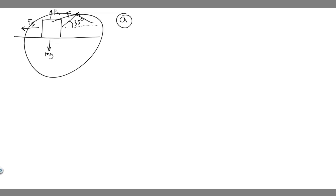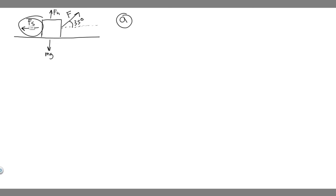So this right here is going to be our image — imagine this is our sled. We have the different forces acting on it, so the first thing you always want to do is draw a free body diagram. We have the mg force going down — the force due to gravity — we have the normal force going up, and the force that the horse is applying in part A at 35 degrees equal to 1240 newtons. We also have the frictional force that will stop it from moving. So let's write down the numbers: the angle is 35 degrees, the mass is 236 kilograms, and the force F is equal to 1240 newtons.